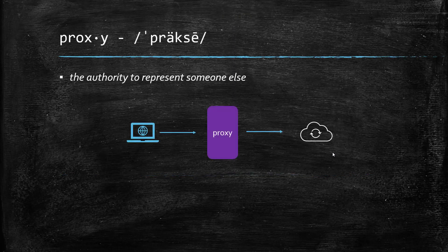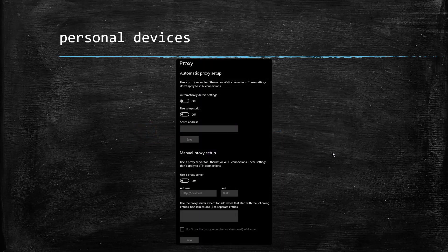Before we see about MITM proxy, first let us see what is a proxy. Proxy means the authority to represent someone else. In the internet, whenever you have a proxy layer between you and the internet, suppose you are requesting a website or a service, the request will be made on behalf of you, and the backend system will not know who is requesting what. Particularly when you are in a corporate network, you will have the corporate proxy between you and the internet. But when you open your personal laptop proxy settings, most of the time it will be turned off unless you are working on security testing or performance testing.